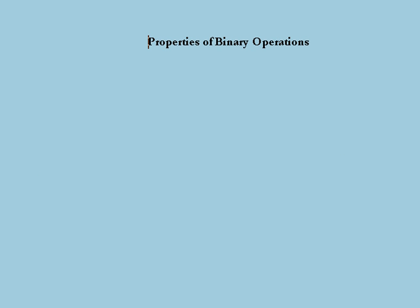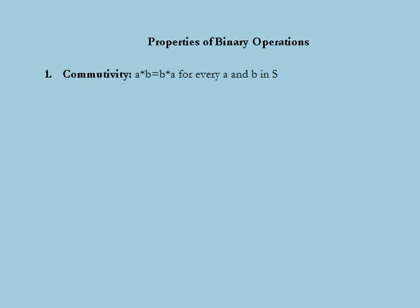Next we move to the properties of binary operations. The first property is commutativity. A binary operator denoted by star is said to be commutative if and only if the binary operation on A and B equals the binary operation on B and A for every A and B in S. Real number addition and multiplication are commutative, while subtraction and division in the real number system are not commutative.